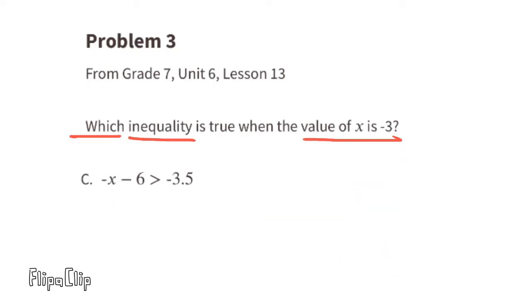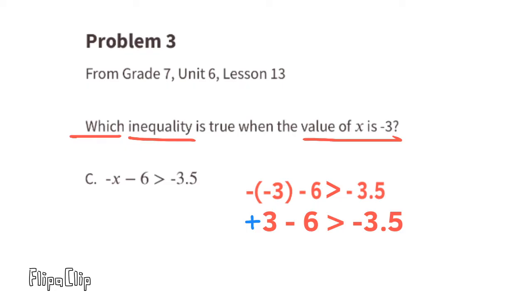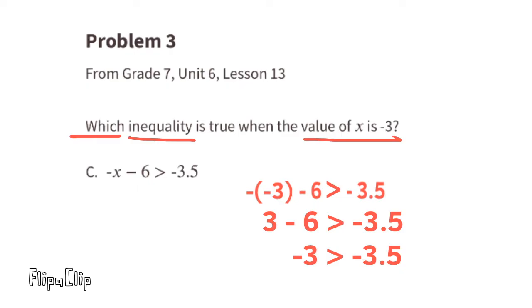Option C: negative x minus 6 is greater than negative 3.5. Substituting x with negative 3: negative times negative 3 minus 6 is greater than negative 3.5. Since a negative times a negative is a positive, this becomes 3 minus 6 is greater than negative 3.5. Since 3 minus 6 is negative 3, and negative 3 is greater than negative 3.5 — negative 3 is closer to zero on the number line than negative 3.5 — this is true. So for inequality C, the value x equals negative 3 works.